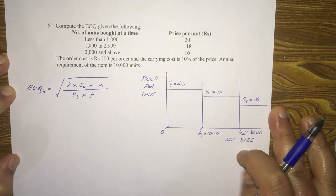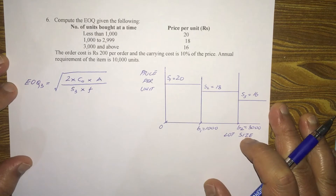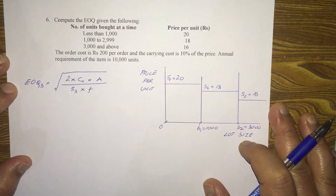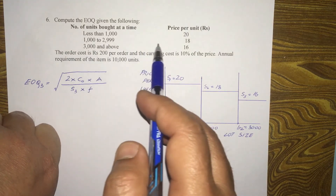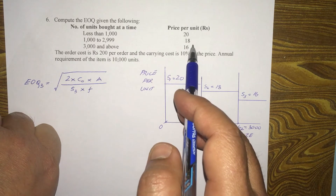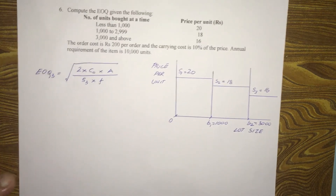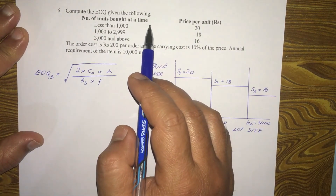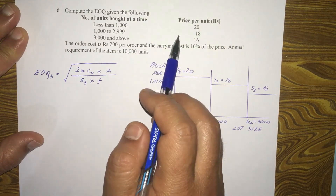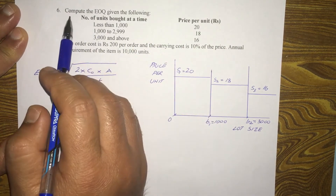Hello and welcome back. Now let's look at another EOQ problem. This problem is slightly different from the previous one I solved. Although both are EOQ with quantity discounts, here we have two quantity discounts, whereas in the previous video there was only one quantity discount.